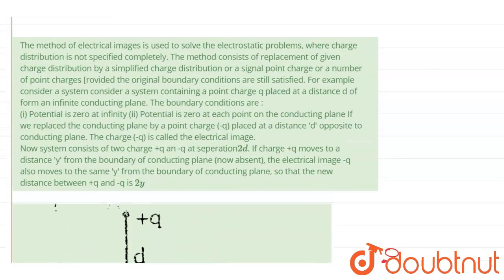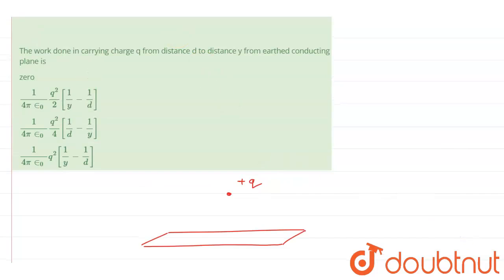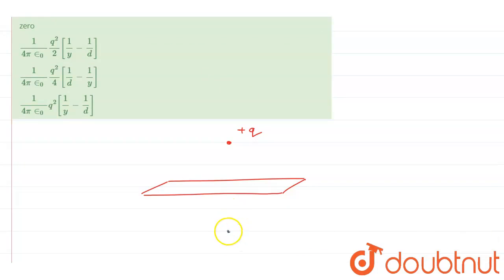So by the method that they have suggested in the paragraph, what I can do is I can assume a charge minus q here. And if initially this was at distance d, so this minus q will also be at a distance d.